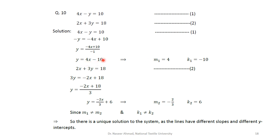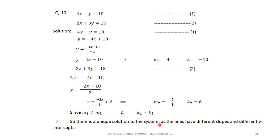For question 10, equation 1 written in slope-intercept form gives m1 equals 4 and k1 equals minus 10. Equation 2 similarly gives m2 equals minus 2/3 and k2 equals 6. The slopes of the two lines are different, so we can declare the solution is a unique solution. Thank you very much.